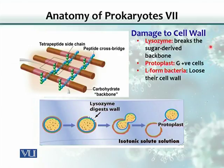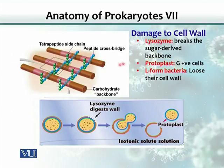Damage to the cell wall: lysozymes that are produced in the body — for example, naturally produced in tears and saliva — can break the cell wall. They break the sugar-derived backbone. When the cell wall is gone, the rest of the bacteria along with the cell membrane can protrude out of the broken or damaged cell wall, and this is called a protoplast.